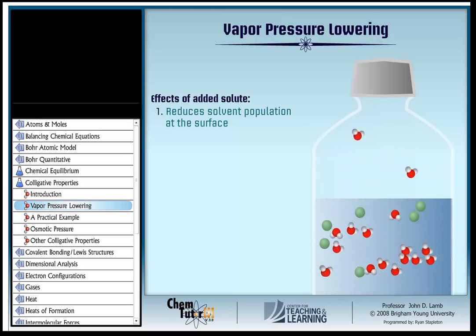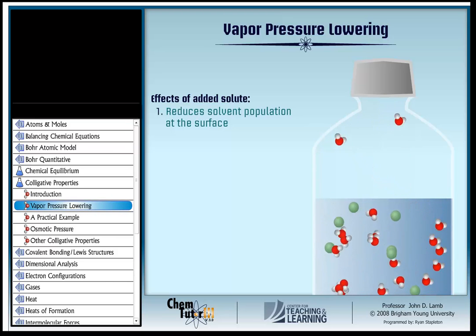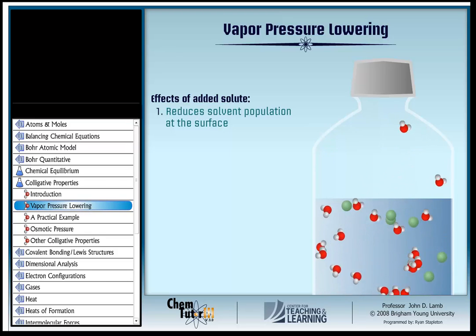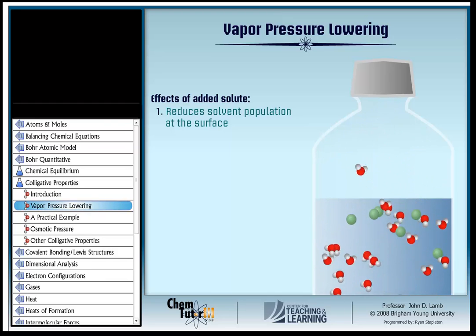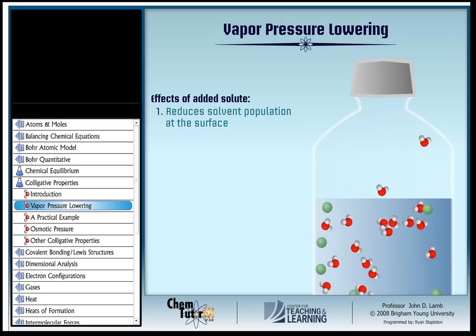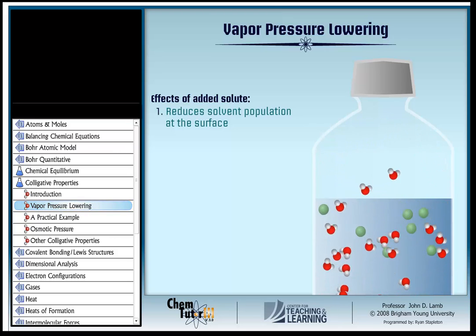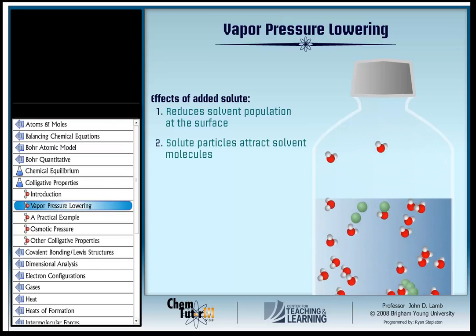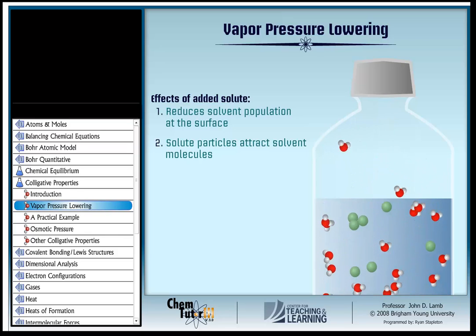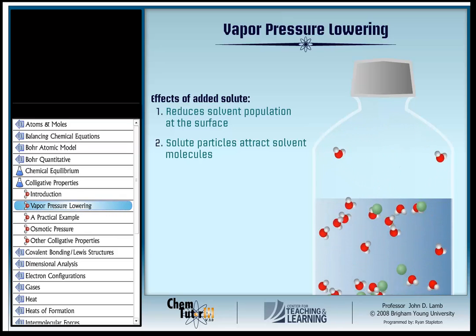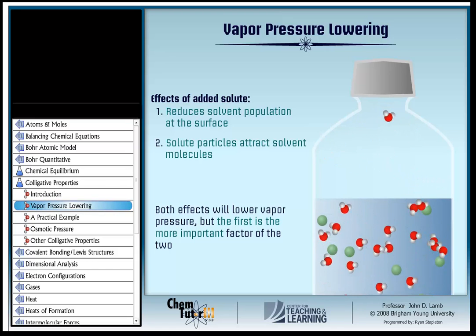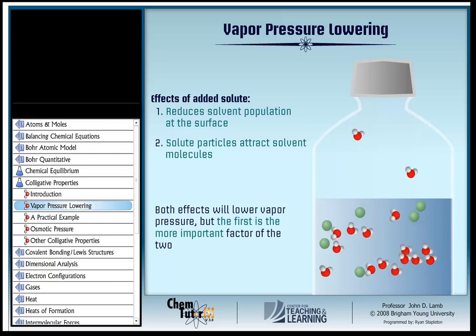There's another less important effect at work here also. If a solute dissolves in the liquid, there must be a fairly strong attraction between solute and solvent molecules — otherwise the solute wouldn't dissolve. So solvent molecules may be more strongly attracted in the liquid phase than ever, making it harder for them to escape into the gas phase, causing the vapor pressure to drop. But the more important factor in affecting vapor pressure is just the relative population of solvent and solute molecules in the mixture.